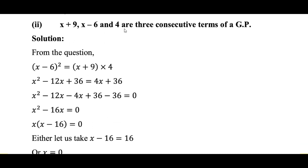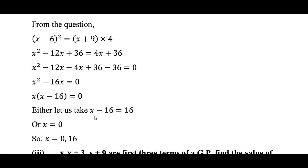x+9, x-6, and 4 are 3 consecutive terms of a GP. Using the GP condition, the middle term squared equals the product of the other two: (x-6) squared equals (x+9) times 4. After 2 or 3 steps of simplification, we get x(x-16) equals 0. So x equals 16 or x equals 0.